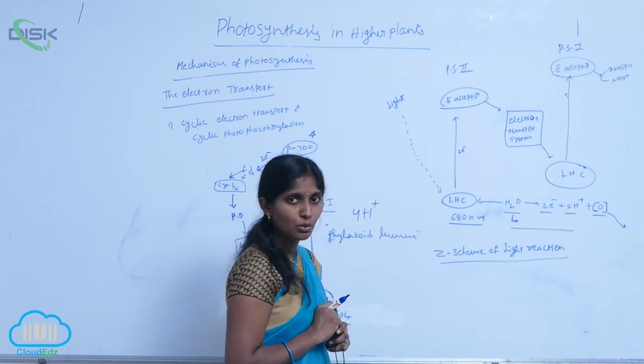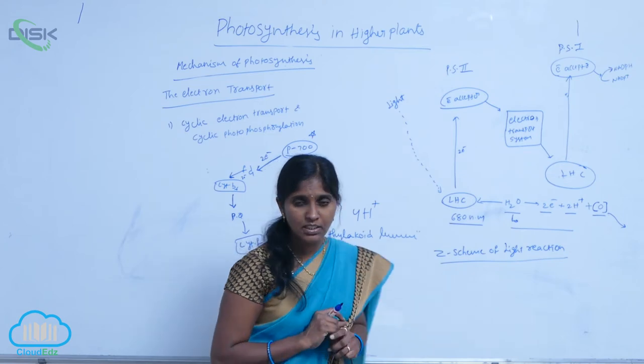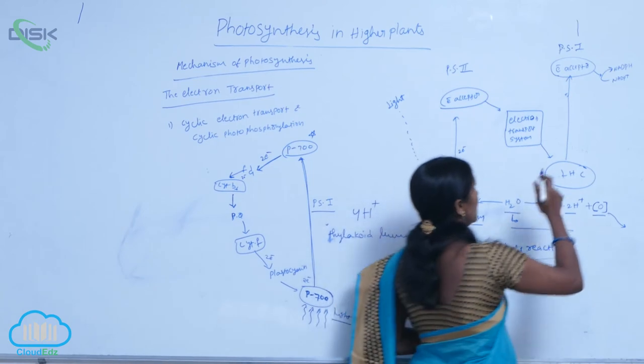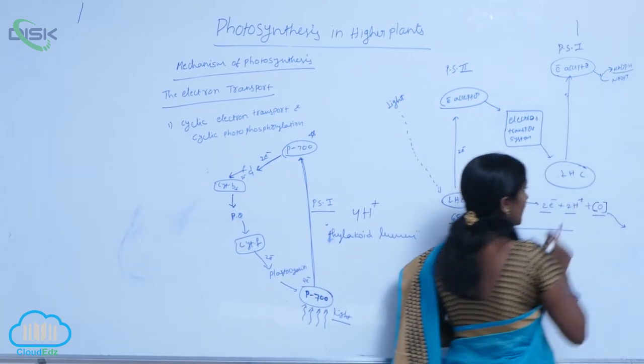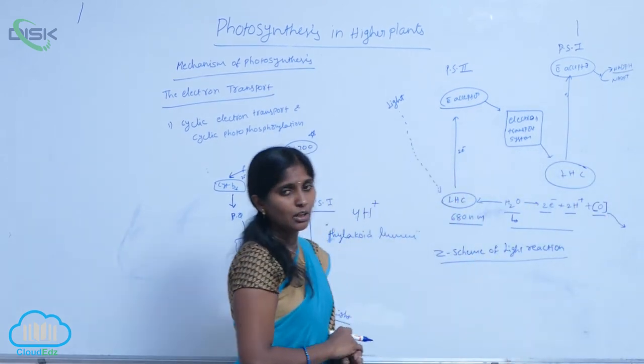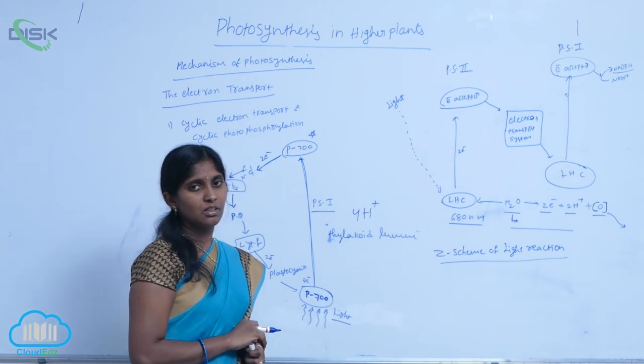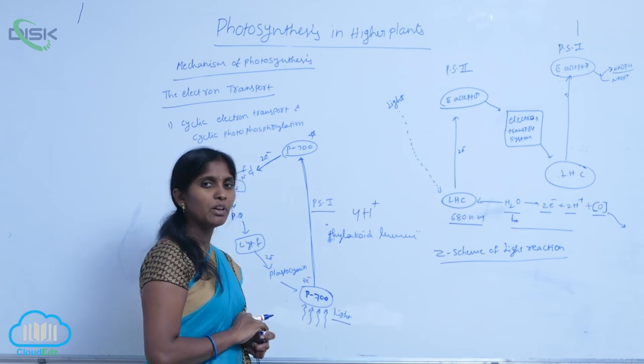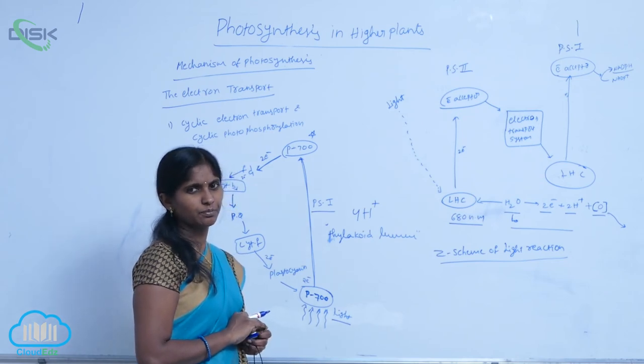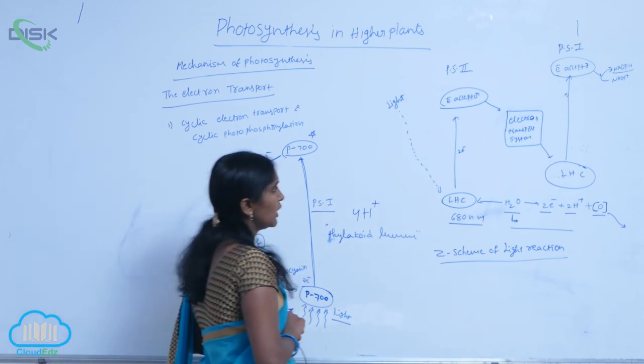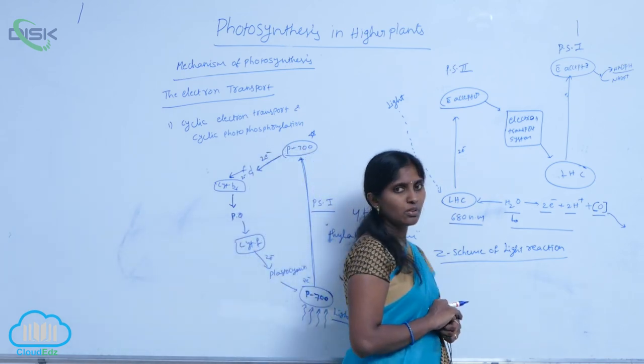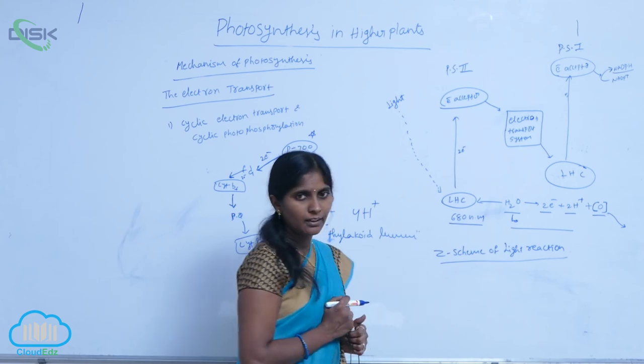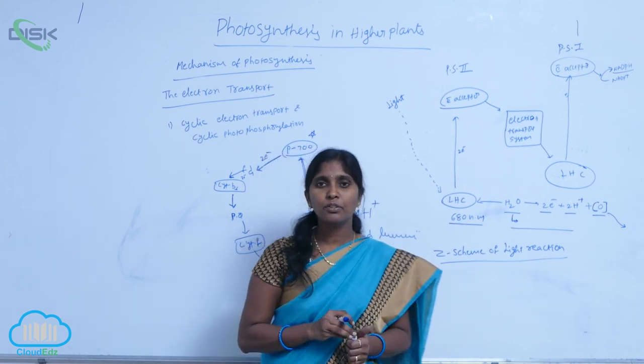Water photolysis - here one oxygen molecule is released and NADPH is also released. Along with the two electrons, there is proton accumulation at the lumen of the thylakoid. So for two electrons, four photons are accumulated in the lumen of the thylakoid.